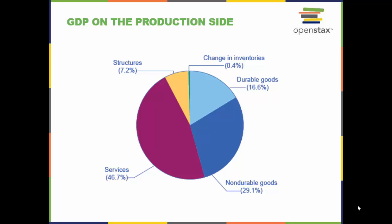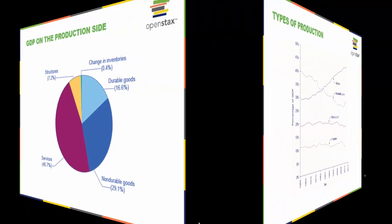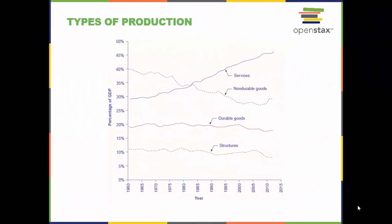Now let's look at the production or supply calculation of GDP. Services make up almost half of the production-side components of GDP in the United States, as we can see in this graph. Services are the largest single component of total supply, representing over half of GDP. Non-durable goods used to be larger than durable goods, but in recent years non-durable goods have been dropping closer to durable goods, which is about 20 percent of GDP. Structures hover around 10 percent of GDP. The change in inventories, the final component of aggregate supply, is not shown here — it is typically less than one percent of GDP.